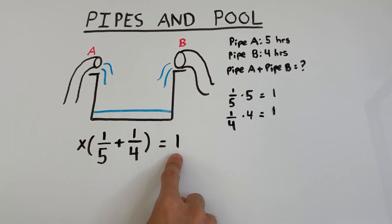You can view this as one entire pool, or more precisely this is actually representing one hundred percent of the work done. So if we want to find out how long it would take both pipes to fill 50% of the pool, we would set this equal to 0.5. If we want to find out how long it would take both pipes to fill 75% of the pool, we would set it equal to 0.75.